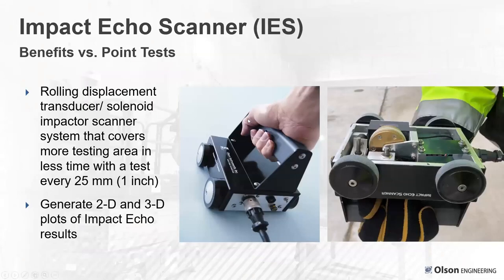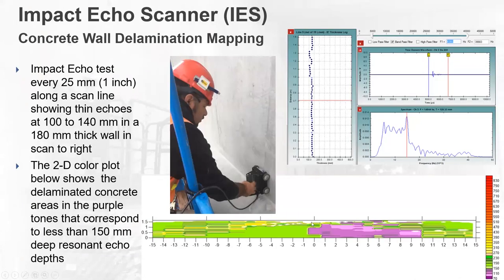Instead of point-by-point testing, you can also do rolling scanning. We use a solenoid with multiple receivers — the solenoid impacts as the receiver rolls — doing tests about every inch along a line to generate 2D and 3D plots of impact echo results. A 3D plot shows vertical height, horizontal distance, and color corresponding to thickness. In this example, we can see a delamination on the backside of the concrete member, sound concrete, and voided concrete from pre-stressed ducts.